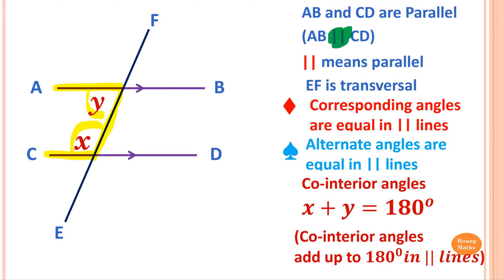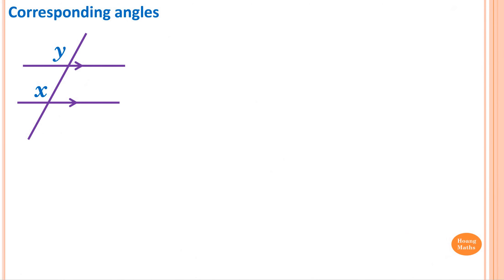We have to state the reason: co-interior angles add up to 180 degrees in parallel lines. Please take note. Now let's recap. Corresponding angles look like the letter F — if you highlight it, it's like a letter F — and they are equal in parallel lines.